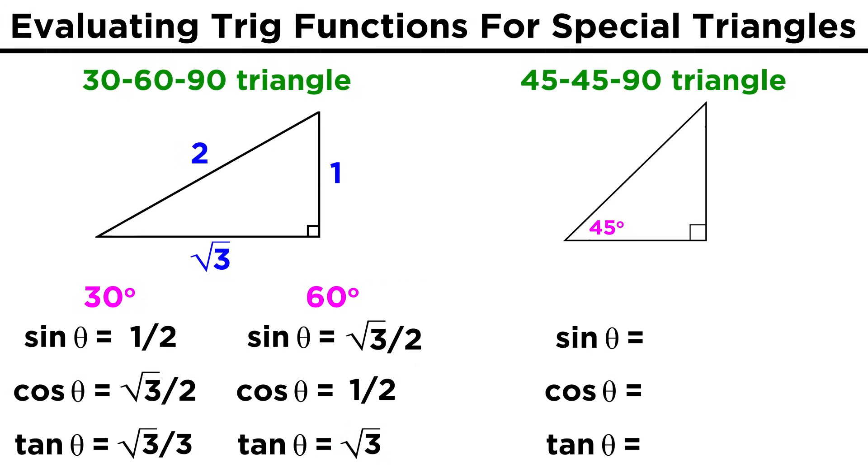Now let's do the same for the forty-five degree angle in this other special triangle. As we recall, if one leg of this triangle is equal to one, the other sides must be one and root two. So the sine of forty-five is one over root two, but we multiply by root two over root two to get root two over two, and the cosine of forty-five will give us the same value, since the two legs have the same length. Then the tangent of forty-five will be one over one, or simply one.